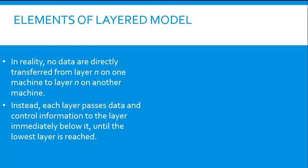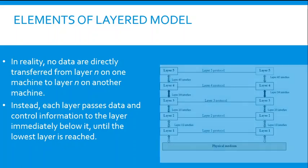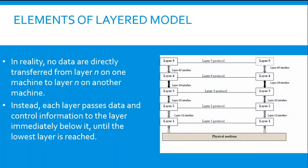In reality, there is no data directly transferred from layer N on one machine to layer N on another machine. Instead, each layer passes the data and control information to the layer immediately below it, until the lowest layer is reached. As you can see from the illustration, from layer 5 to layer 1, the physical medium carries the packets or messages.